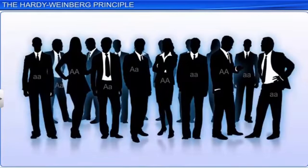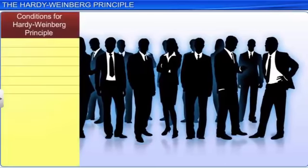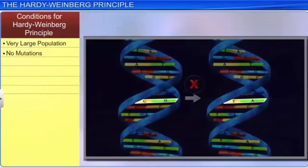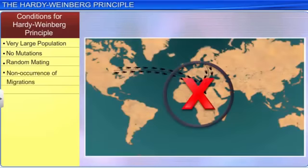In other words, the totality of alleles of all genes in a population is called the gene pool, which remains constant for a given population. The conditions assumed for the Hardy-Weinberg principle are: a very large population, no mutations, random mating, and non-occurrence of migration.